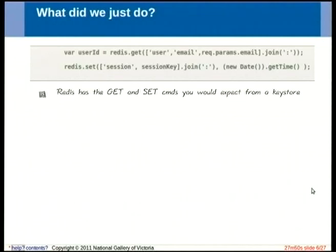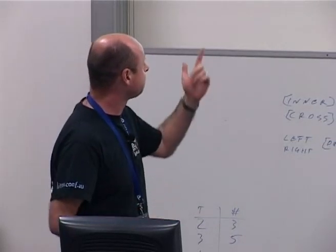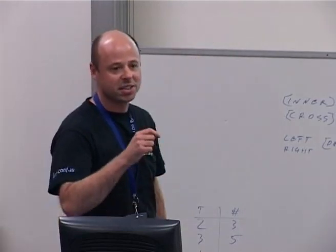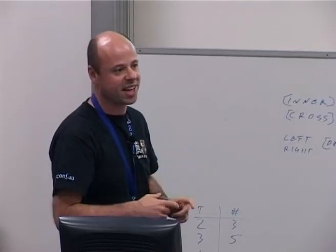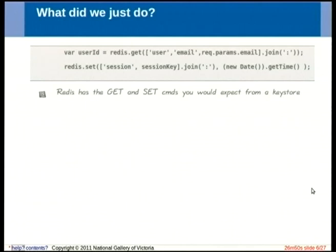So basically those two lines use the GET and SET commands in Redis. Has anyone used things like memcache? Essentially Redis is a key store with benefits. It's got the basic GET and SET commands — that's really what key stores are about. You've got a key, a simple string for a key, and a simple string value. Basically I'm grabbing the key for the particular user who's logging in. Rather than string concatenation, I'm using the join function in JavaScript to concatenate an array of strings together. In the SET, I'm looking up based on the user's email some value I've stored, and also setting a session key for them when they log in.